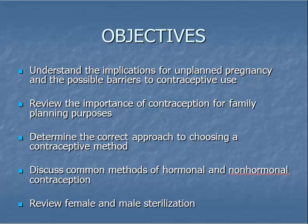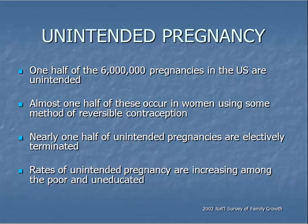The objectives for this presentation are listed here. Approximately 6 million pregnancies occur in the United States each year, and half are unintended. Of the 3 million unintended pregnancies, almost half are electively terminated. Effective contraception is a necessity for family planning.